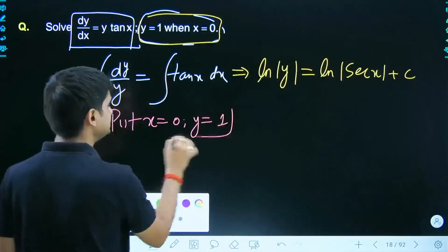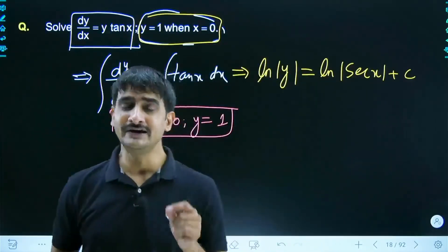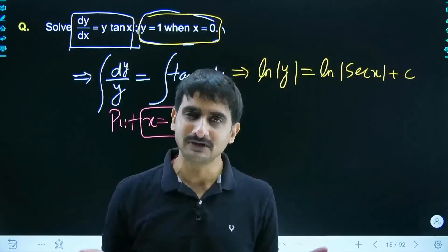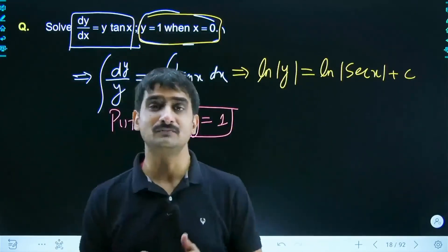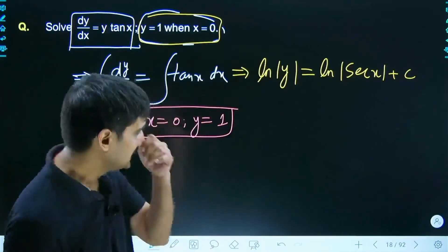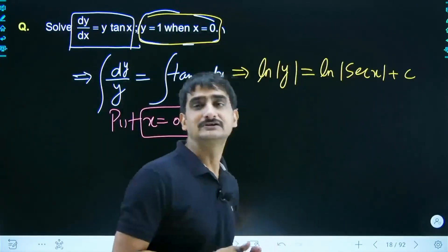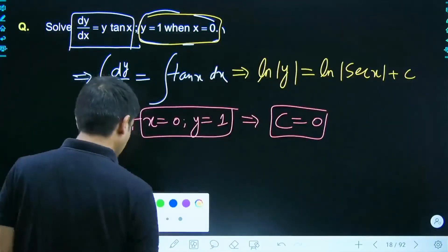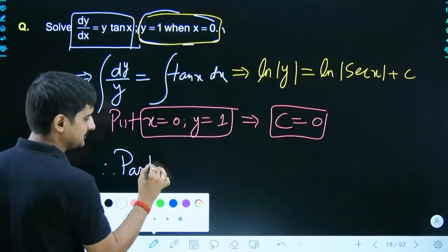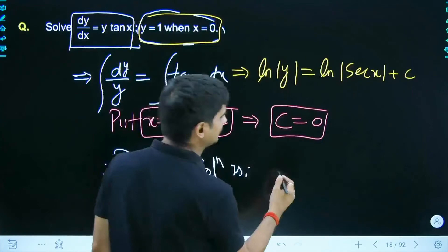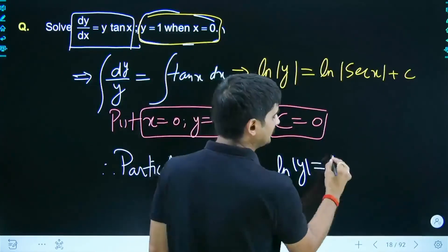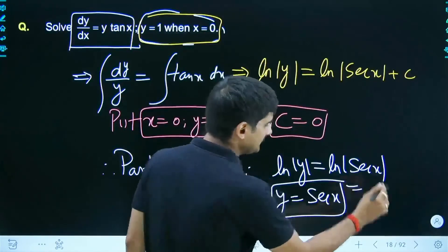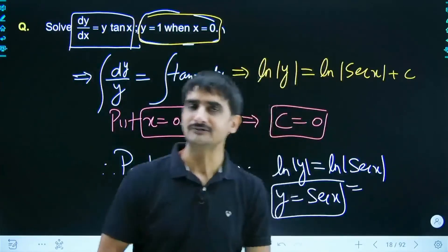The general solution obtained from integrating the differential equation in terms of unknown constant C is called the general solution. When you substitute a particular value of C, you get a particular solution. Here, substituting x = 0 and y = 1 into the general solution: ln|1| = 0 and sec(0) = 1, so C = 0. Therefore the particular solution is y = sec x.